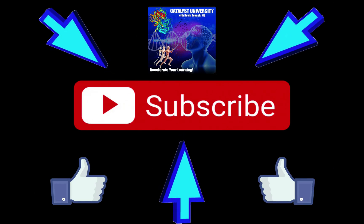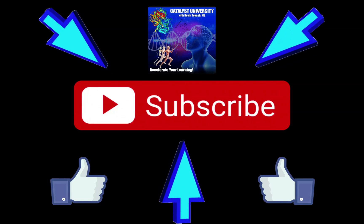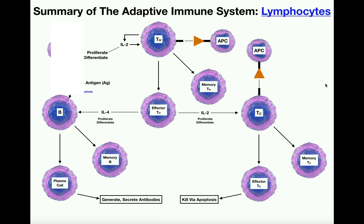Welcome back to Anatomy and Physiology on Catalyst University. My name is Kevin Tokoth. In this video, we're going to do a summary of the adaptive immune system with focus on the lymphocytes — that is B cells and T cells, or B lymphocytes and T lymphocytes.